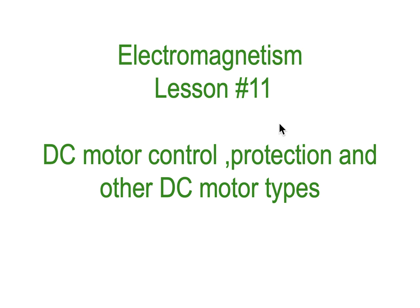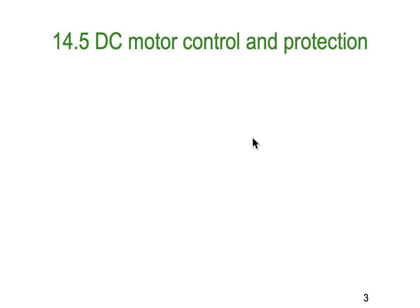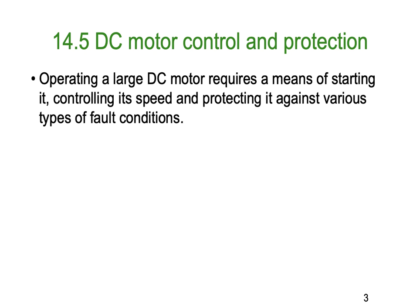Hello, it's Dr. Ken here with you again. This is Electromagnetism lesson number 11, our last lesson in Electromagnetism, and we're looking at DC motor control, protection, and a few other variations of DC motor types. We're using the contents of the textbook, sections 14.5 and 14.6.